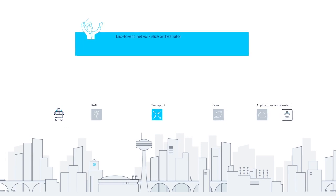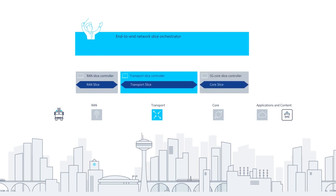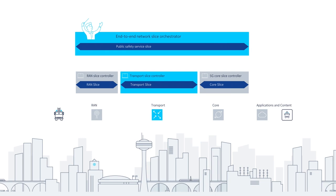The Service Orchestrator in the CSP's network works with controllers for the RAN, CORE, and Transport to automatically set up slices of network resources in each of these domains. These connect together to form an end-to-end slice of network resources, from the end-user equipment to the data center where the application is running.